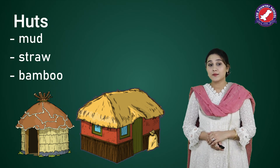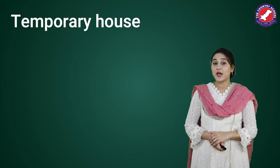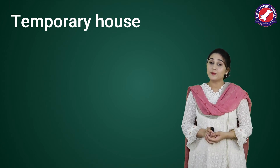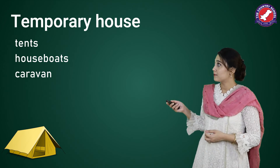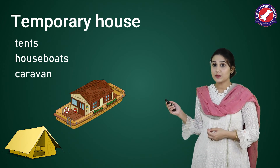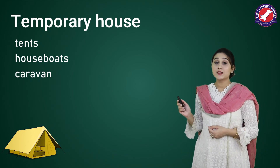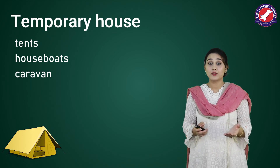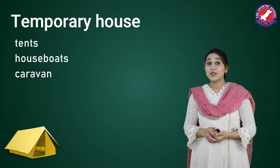Now, what are the other types of houses? Yes — temporary houses. These houses can be folded or moved from place to place, like tents, houseboats, and caravans. What are tents? A tent is made up of canvas, which is a type of cloth. It can be folded and moved around.